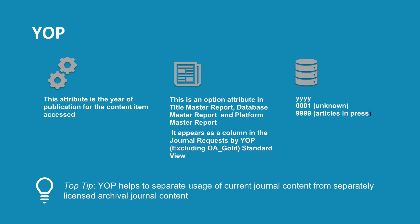In some journals, users may access articles that have been accepted for publication, but which have not been formally published, and which do not yet have the complete volume, issue and page information. In these cases, the YOP will be expressed as 9999.